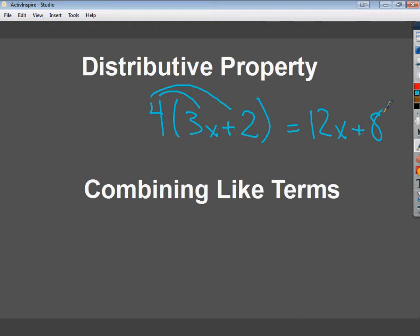Now, the precursor to that is simply combining like terms. The idea of like terms is not only regular numbers or numbers without variables are like terms. 3 plus 2 is a like term. If I'm adding them, it's just 3 plus 2. No problem.